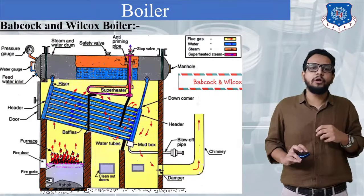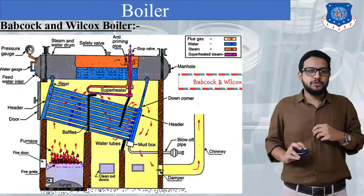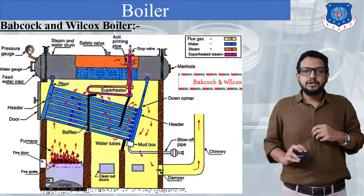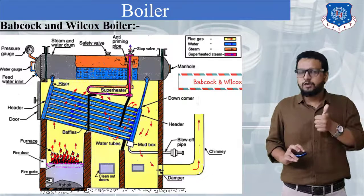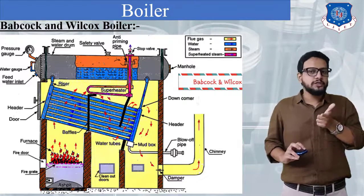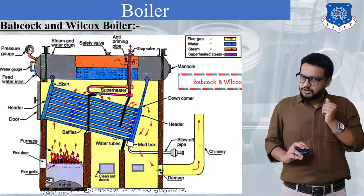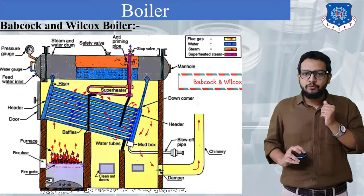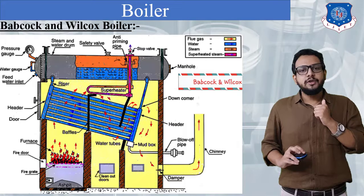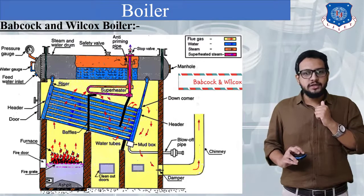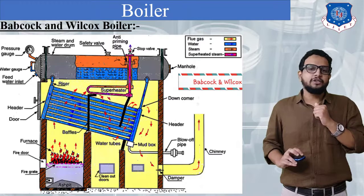Now let us see our next type of boiler, that is the Babcock and Wilcox boiler. You can see the diagram on your screen. Let us discuss the four parts again: characteristics, specification, construction, and working. Starting with characteristics: the shell of the boiler is kept horizontal, which means it is a horizontal boiler. Based on the circulation, you can see that tubes are kept at an inclination.